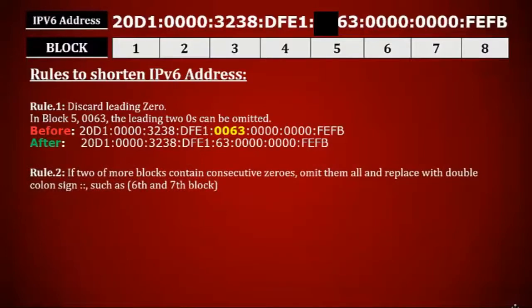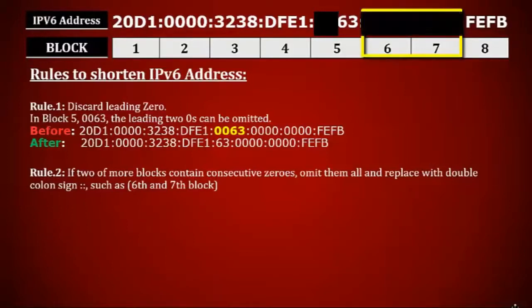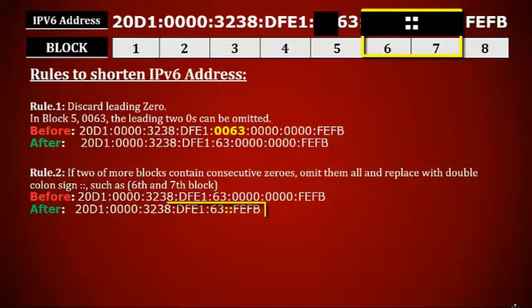Rule number two is: if two or more blocks contain consecutive zeros, omit them all and replace with double colon sign. Which means if you find two blocks together containing only zeros, then they can be omitted and replaced with double colon. For example, here we can see blocks six and seven are containing consecutive zeros, so we are going to omit these zeros and replace with double colon. Now your IP address will look like this.